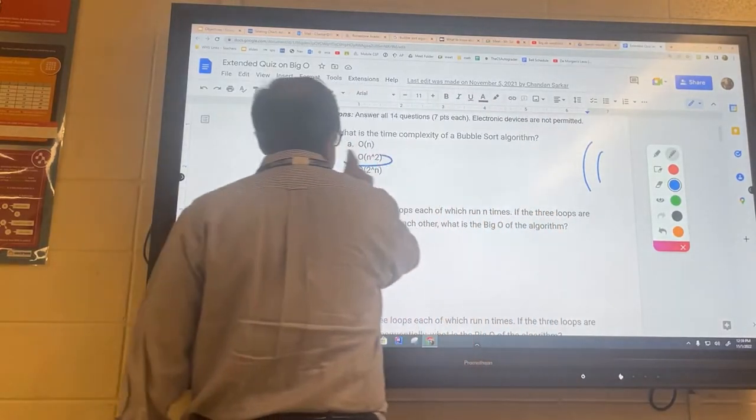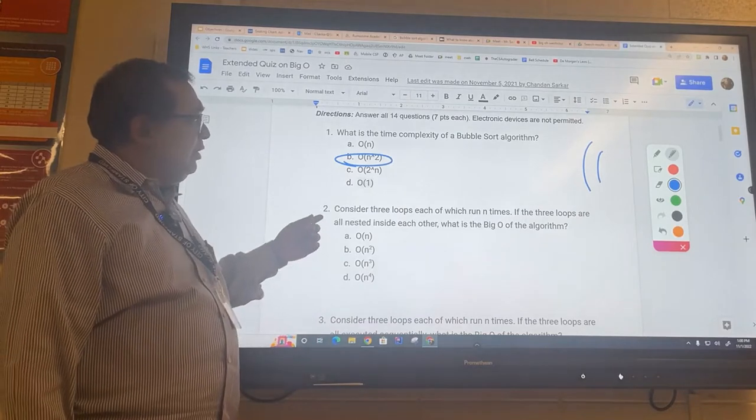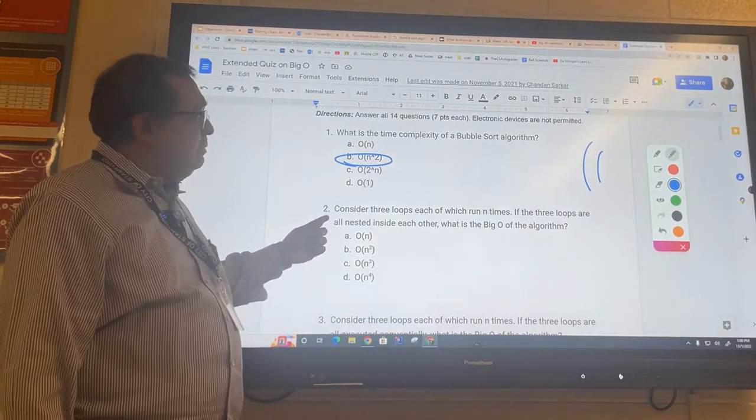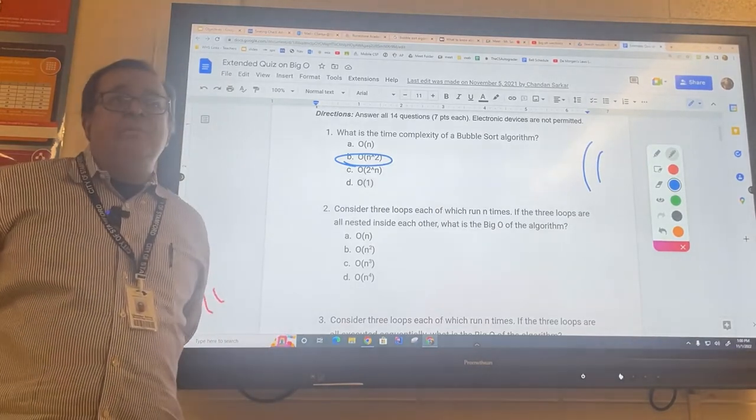Big O of n squared. That one's going to be O of n squared. Now consider three loops, each with run times of n. If the loops are all nested inside each other, what would be the Big O of that algorithm, Mr. Franovic?